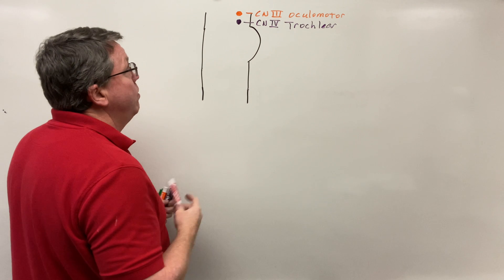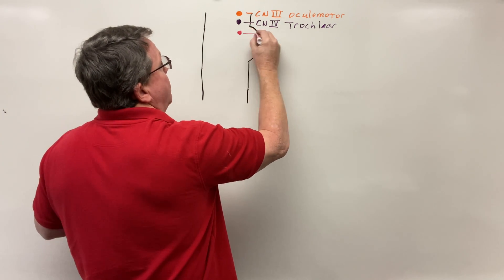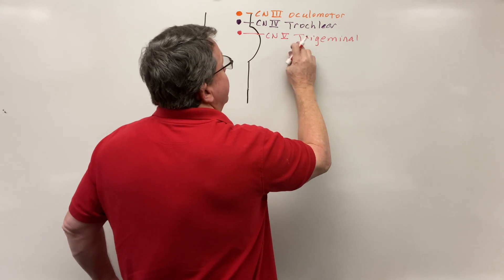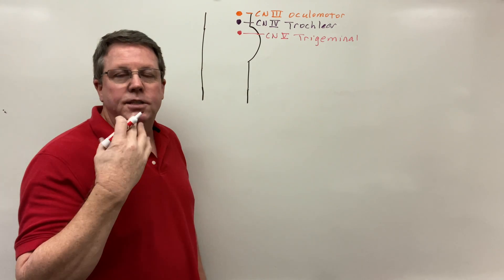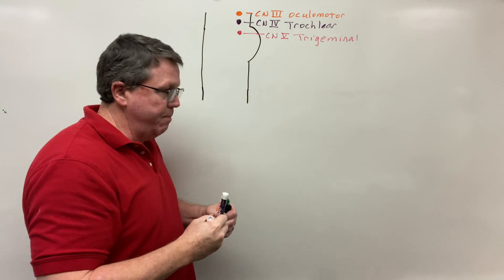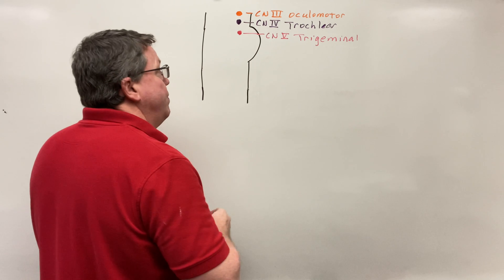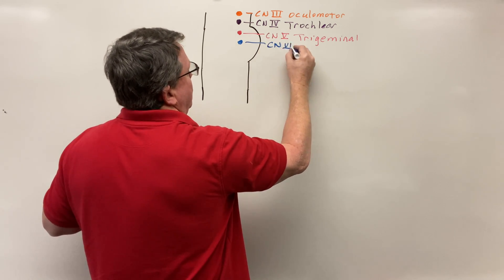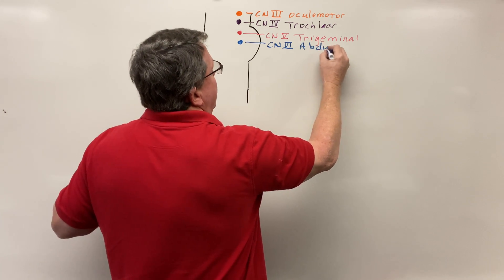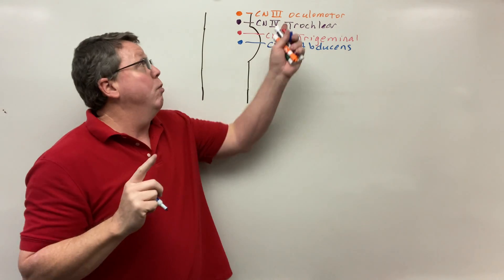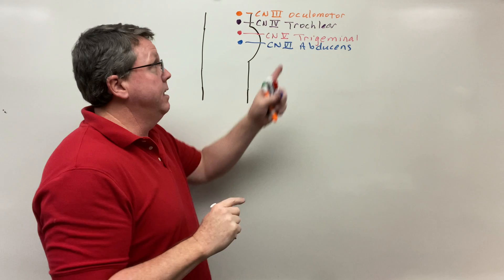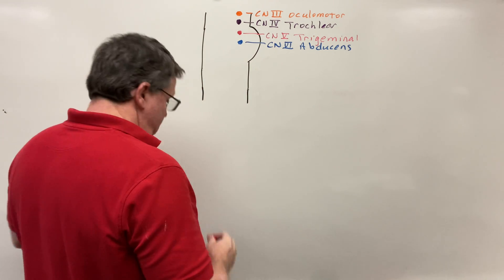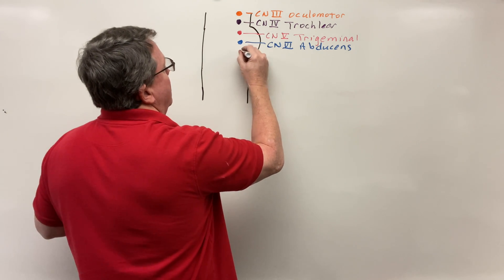In the pons we had cranial nerve 5, the trigeminal nerve, which provides sensation to the face through three branches and controls the muscles of mastication for chewing. Also in the pons was cranial nerve 6, the abducens nerve, which moves the eye laterally. It works together with cranial nerve 3 — cranial nerve 3 moves the eye medially while the abducens moves it laterally.